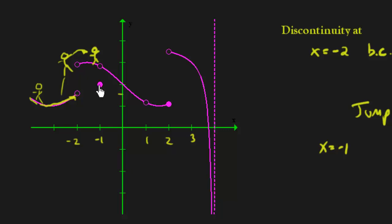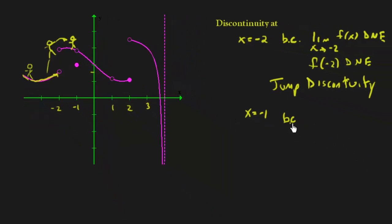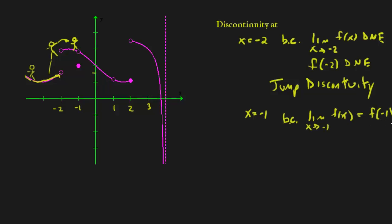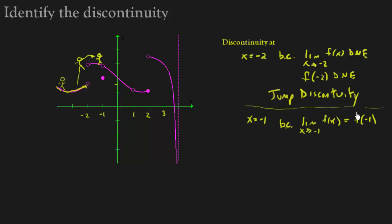But the reason that it is not continuous is because the limit as x approaches negative 1 doesn't actually equal the y value at negative 1. So that's our reason for this discontinuity, and we call this a removable discontinuity.